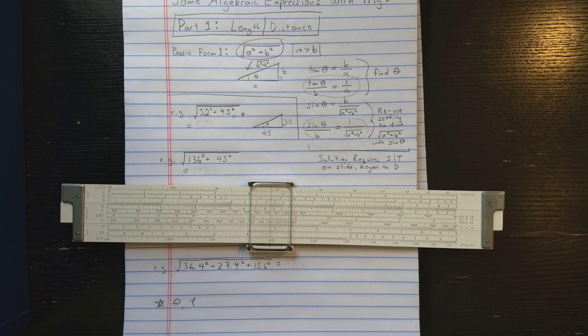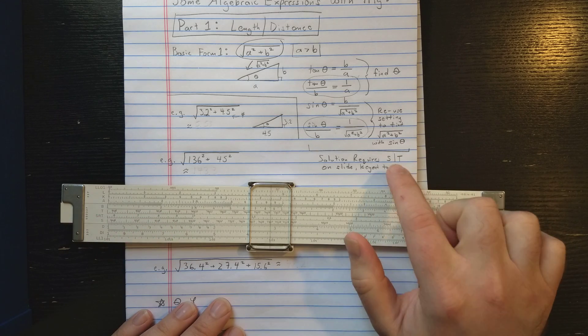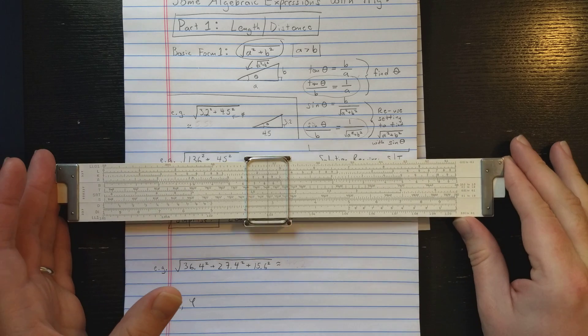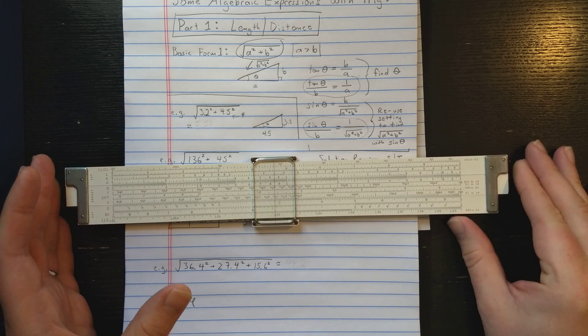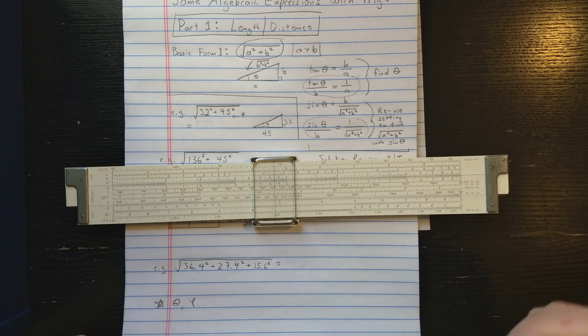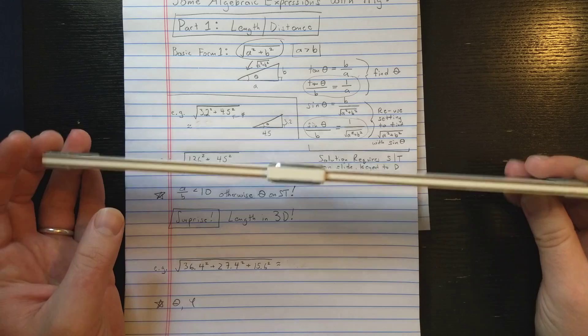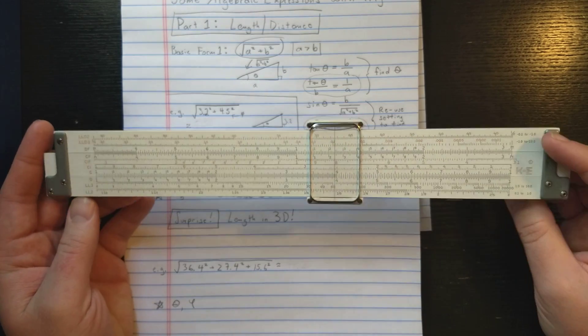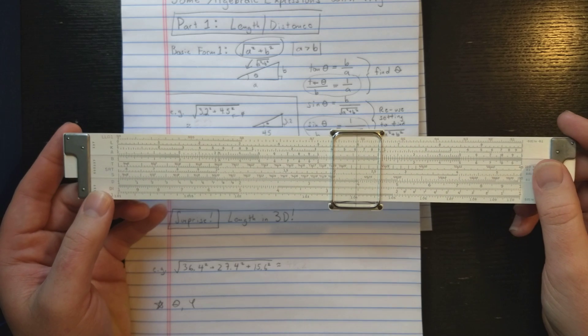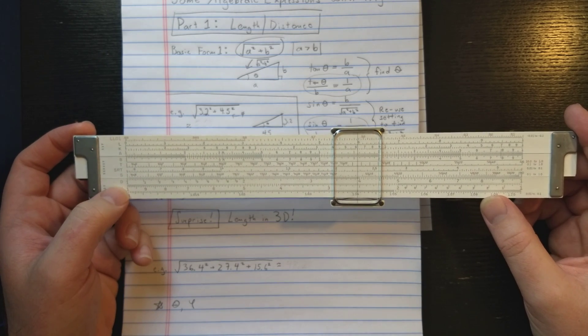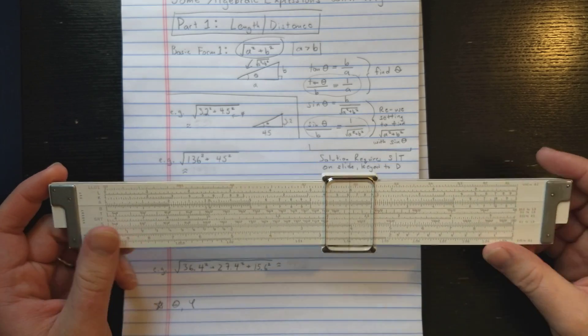Now, what kind of slide rule do you need to do this? You need a slide rule which has S and T keyed to D. So any REITS slide rule, standard REITS slide rule would be like this if you flip the slide, if you reverse the slide. Here I'm going to use this K and E log log duplex desi trig on the trig side. But what we're basically going to need here are S, T and D to do this setting.